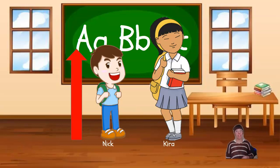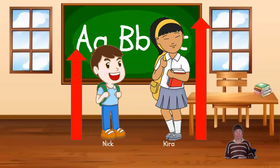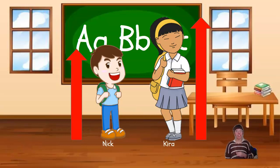Now we can measure Kira's height. To measure Kira's height, we also started at her feet and measured to the top of her head. We can see that Nick's arrow is shorter than Kira's arrow, which means that Nick is shorter than Kira.